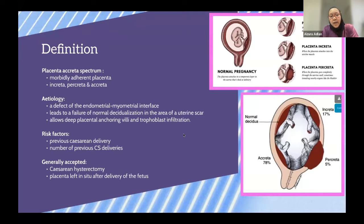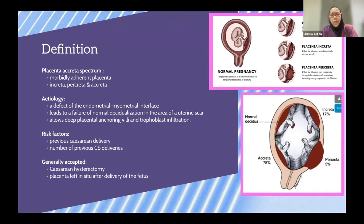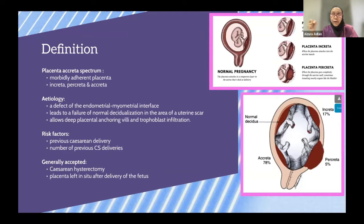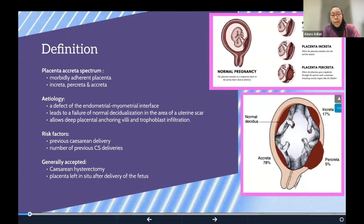We understand that this occurs because of a defect at the endometrial-myometrial interface — a failure of normal decidualization in the area of the uterine scar. This allows deep placental anchoring villi and trophoblast infiltration. The main risk factors include previous cesarean delivery and the number of previous cesarean deliveries. Generally, the accepted practice is a cesarean hysterectomy, either immediately or delayed.